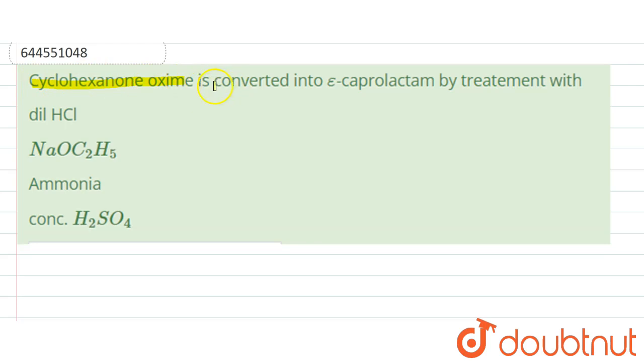Options are: option A, dilute HCl; option B, NaOC2H5; option C, ammonia; option D, concentrated sulfuric acid. Okay, so in this question we have to find the suitable reagent for the conversion of cyclohexanone oxide to epsilon caprolactam.